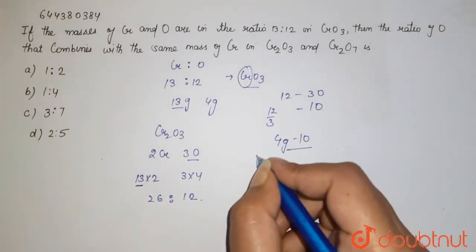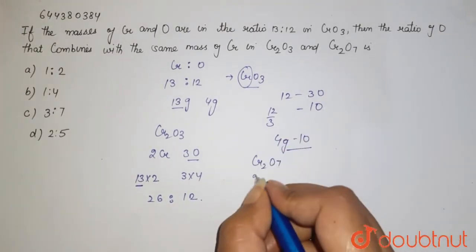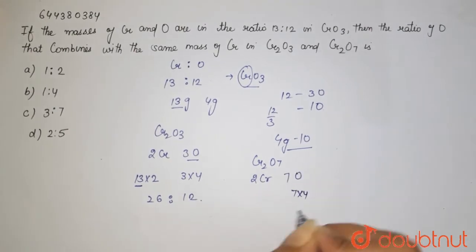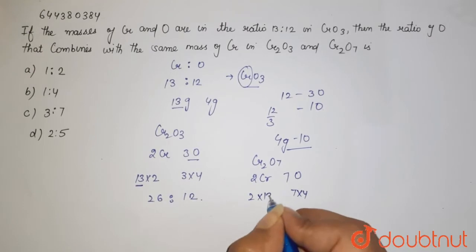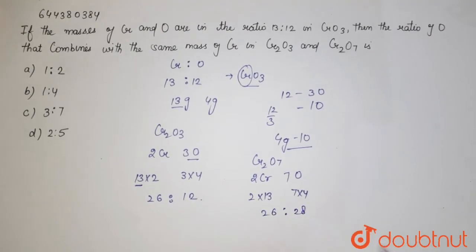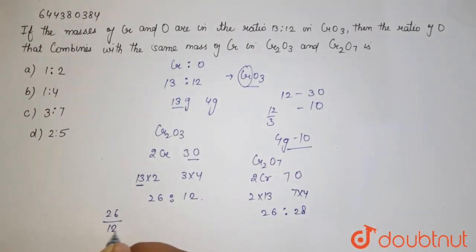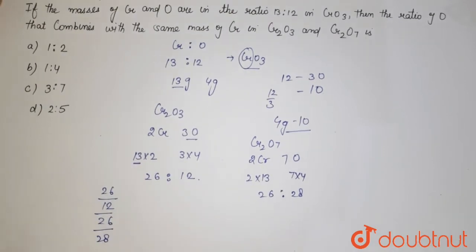Then we are having Cr2O7, here two chromium and seven oxygen. So it is seven into four, and here it is two into thirteen, that is 26:28. So you will find the ratio of your mass, that is 26 and it is 26 upon 28. So here ratio...